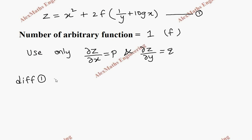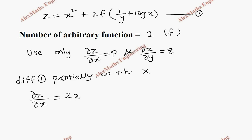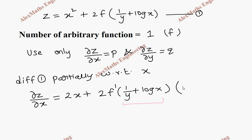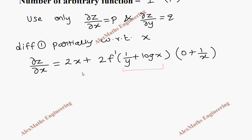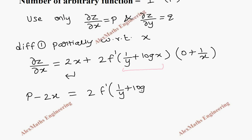We are going to differentiate this partially with respect to x. So this is dou z by dou x, and it is 2x. The constant 2 is written as is, f derivative is f dash, the inner function should be written as is, then as per the chain rule we find the next term: 1/y — y is constant so its derivative is 0 — and this gives 1/x. Rearranging, we take this to the other side: p minus 2x equals 2 f dash of (1/y + log x) into 1/x. Let's take this as the second expression.